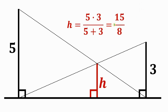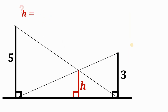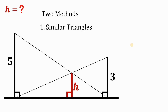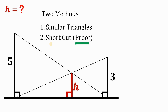The answer to this question is 15 over 8 units, and this is just 5 times 3 over 5 plus 3 — a shortcut. In this video, I will show you two different methods to answer this kind of question. The first is using similar triangles, and the second is using a shortcut. But before we use the shortcut, I'll show you how it works with a proof.